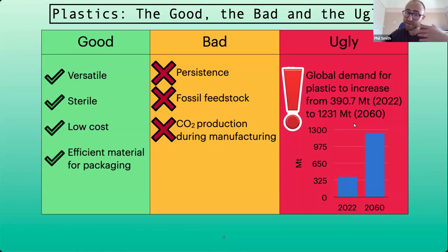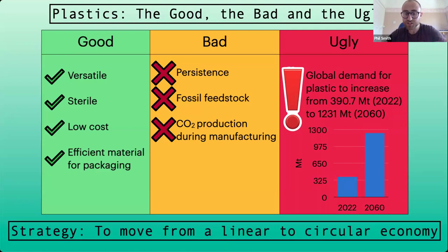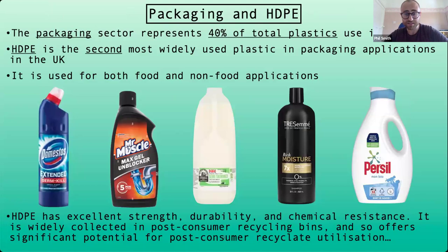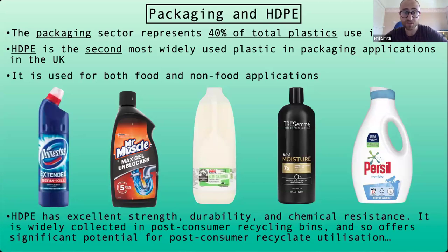That's worrying because all of those bad properties of plastic will be exacerbated. So what's the strategy? The strategy is to move from a linear economy - where you take raw material, turn it into plastic, use it, and throw it away - to a circular economy, i.e. recycling. That's what we're interested in, and specifically our project has been focusing on plastic packaging.